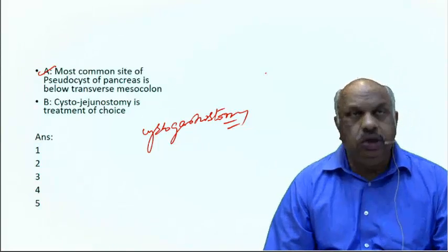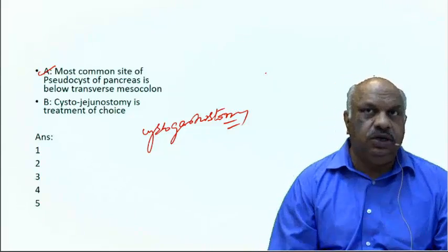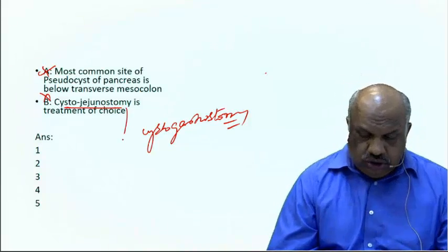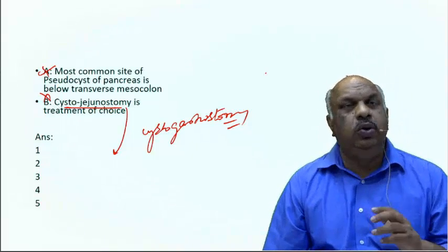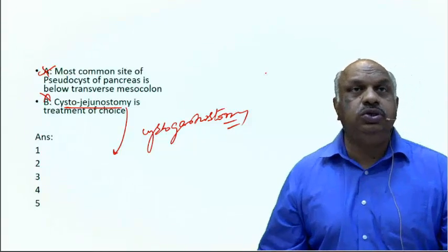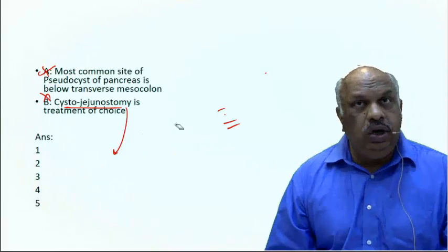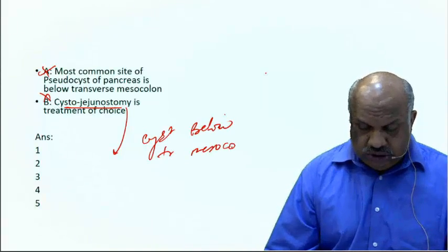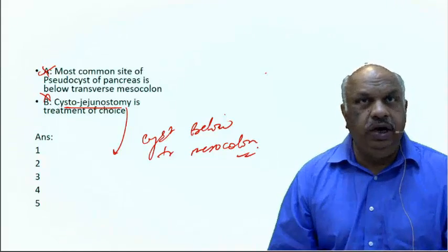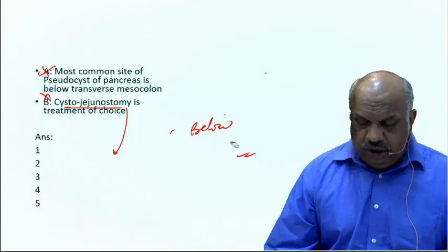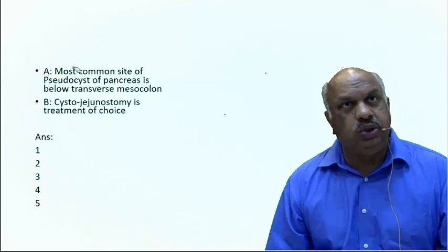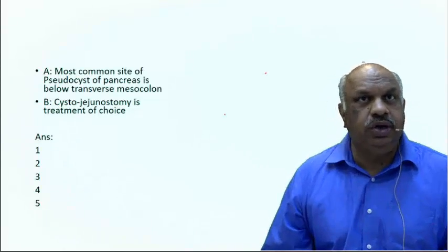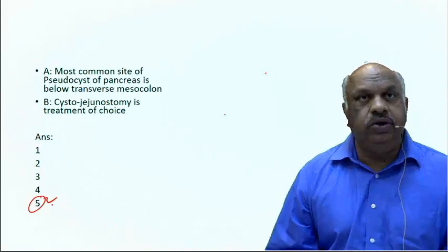Analyzing the question: the first option is wrong — pseudocysts are not below the transverse mesocolon; they are in the lesser sac, above it. The second option is also wrong — cystojejunostomy is not the treatment of choice; cystogastrostomy is. Cystojejunostomy is only indicated for cysts below the transverse mesocolon, about 10% of cases. So both assertion and reason are wrong — the answer is option five.